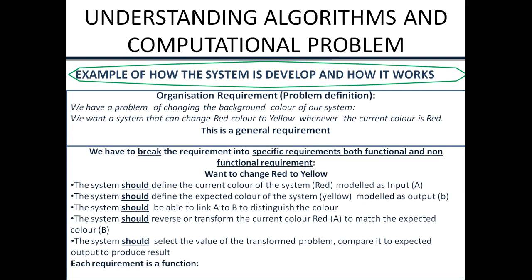Each requirement is a function. We now have about five requirements in total. Before that, we had the general complex requirement — the bigger problem — and we have now broken it into smaller, distinct requirements. Now we have to solve each one by one, writing a functional algorithm for each to sort it out, then stick them together at the end to come up with the overall solution.